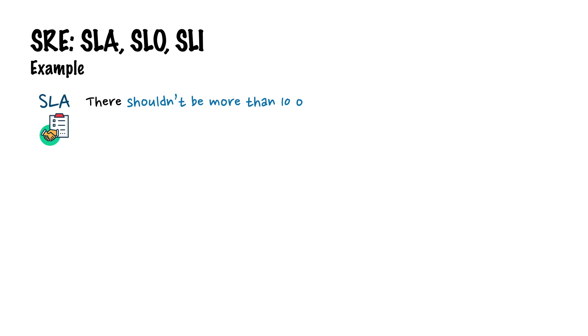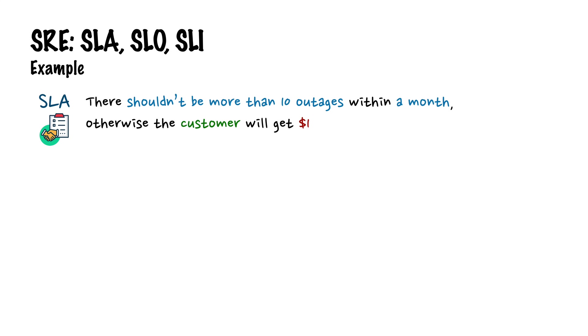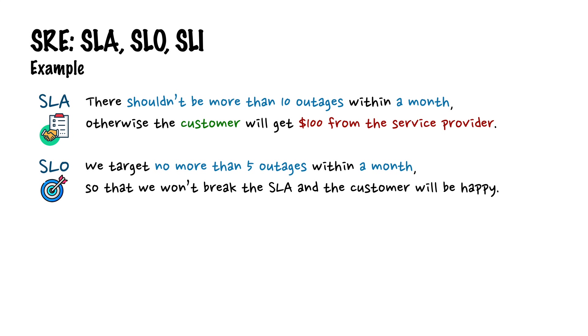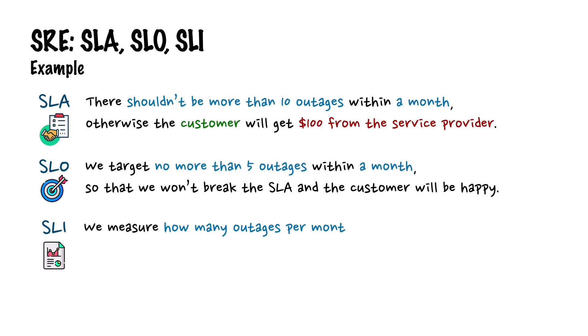For more clarity, let's have a look at some examples. As our SLA, let's say there should be no more than 10 outages within a month — otherwise the customer will get $100 from the service provider. As our SLO, let's say we are targeting no more than 5 outages within a month, so that we won't break the SLA and the customer will be happy. And for the SLI, let's say we measure how many outages occur per month to compare with our SLA and SLO.